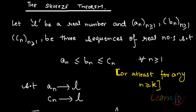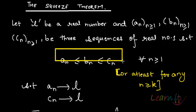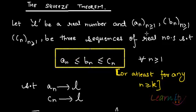That relationship is that a_n is less than or equal to b_n, which is less than or equal to c_n. So b_n is basically squeezed between a_n and c_n for all n greater than or equal to 1, or at least for some n greater than or equal to k.